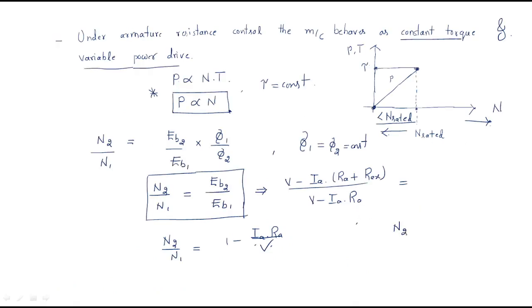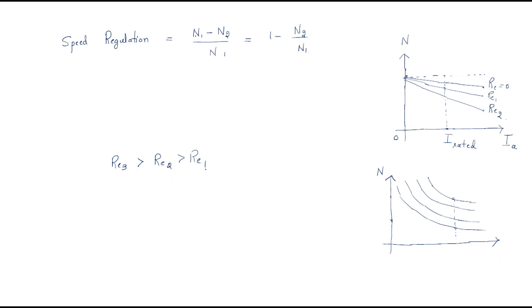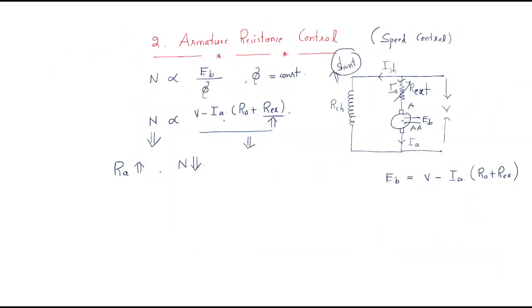Finally, we can conclude that the speed regulation is: n1 (without external resistance) and n2 (with external resistance). The speed regulation equals n1 minus n2 divided by n1, which is 1 minus n2/n1. Substituting, we get: speed regulation = Ia × Ra / V. This is called the speed regulation. This is the speed control of the DC motor by using armature resistance control. I hope all of you understood the session. Thank you.